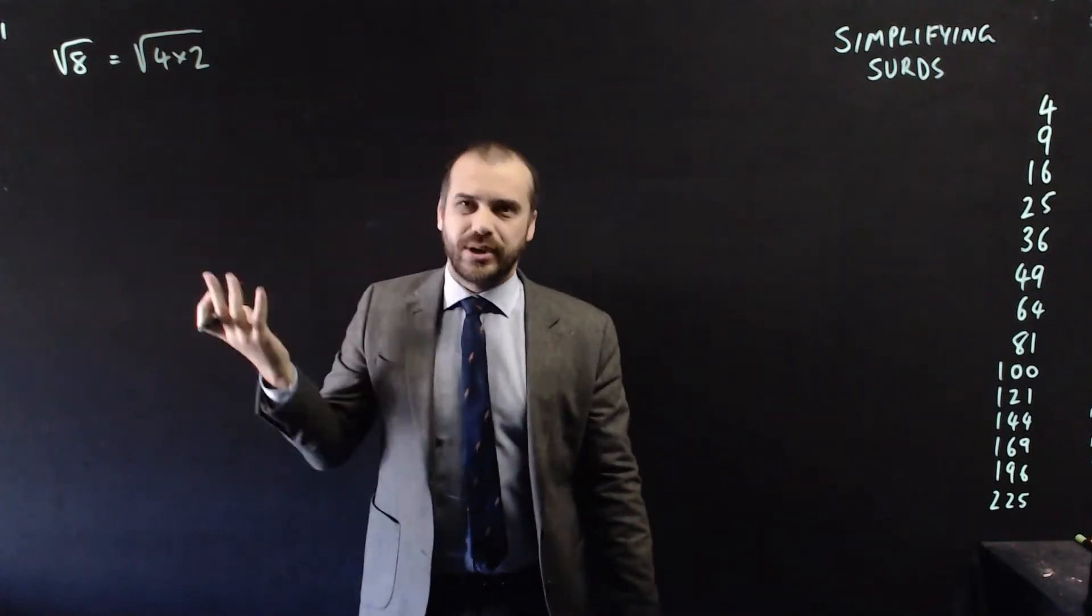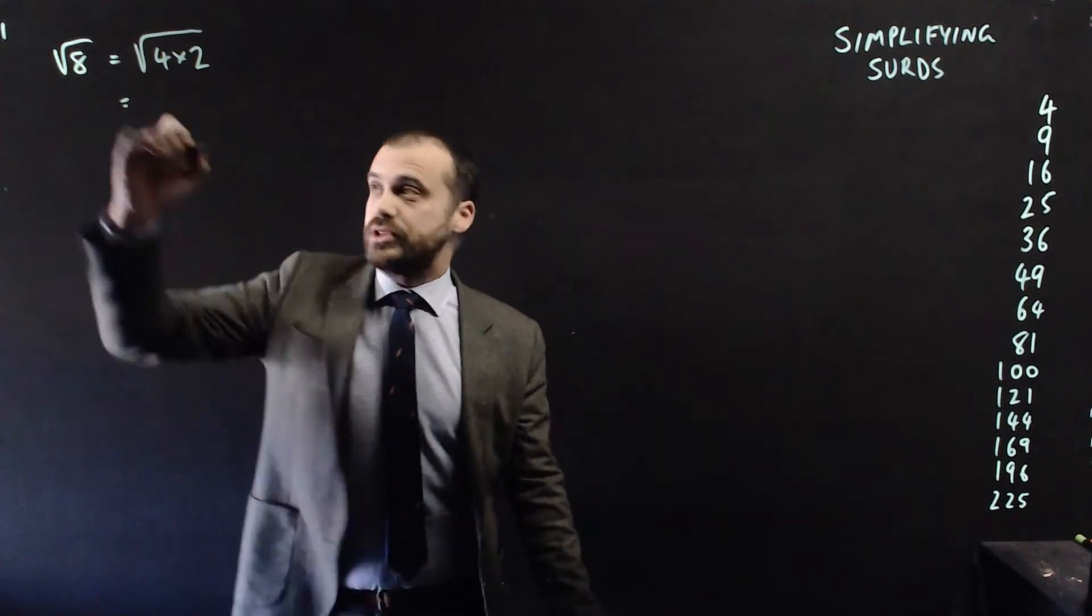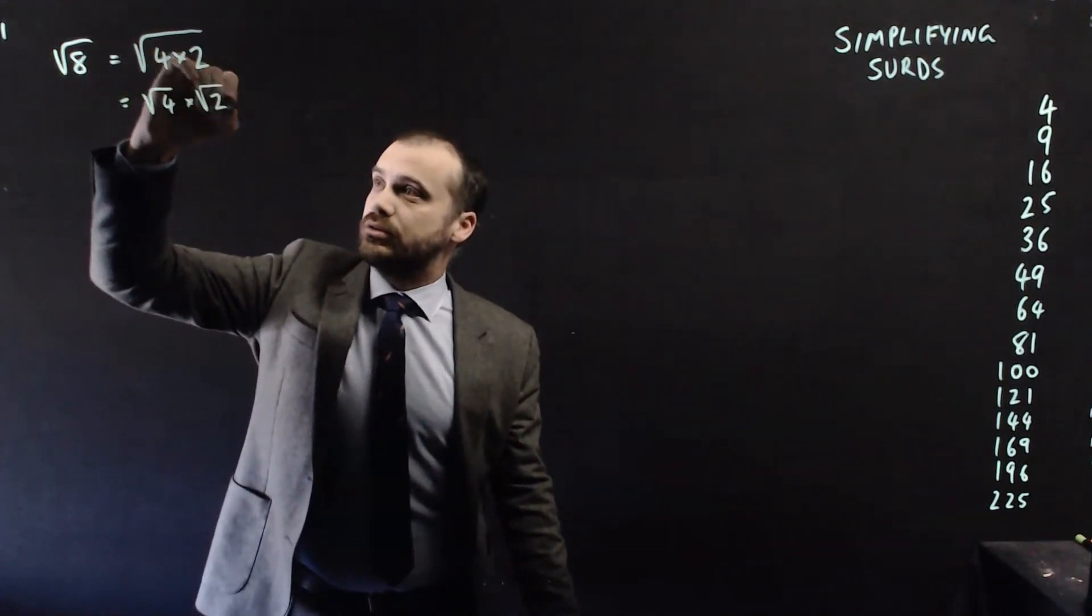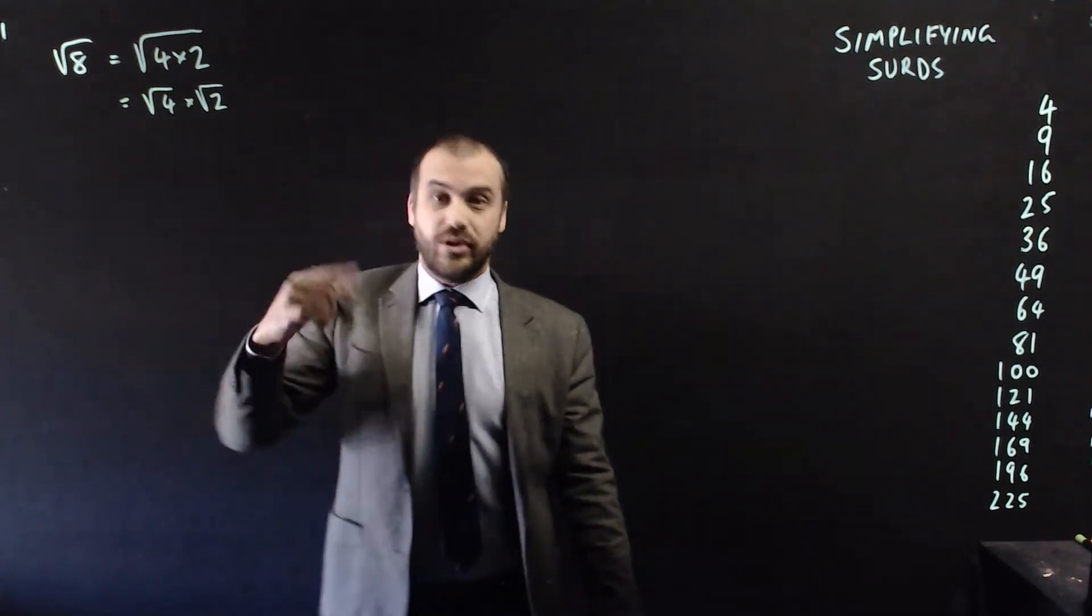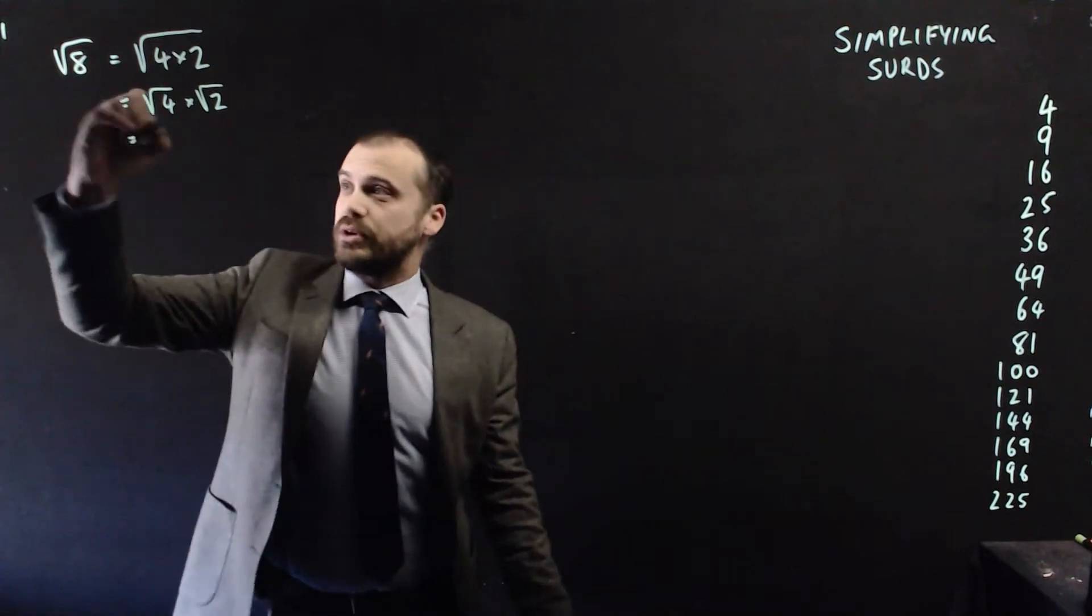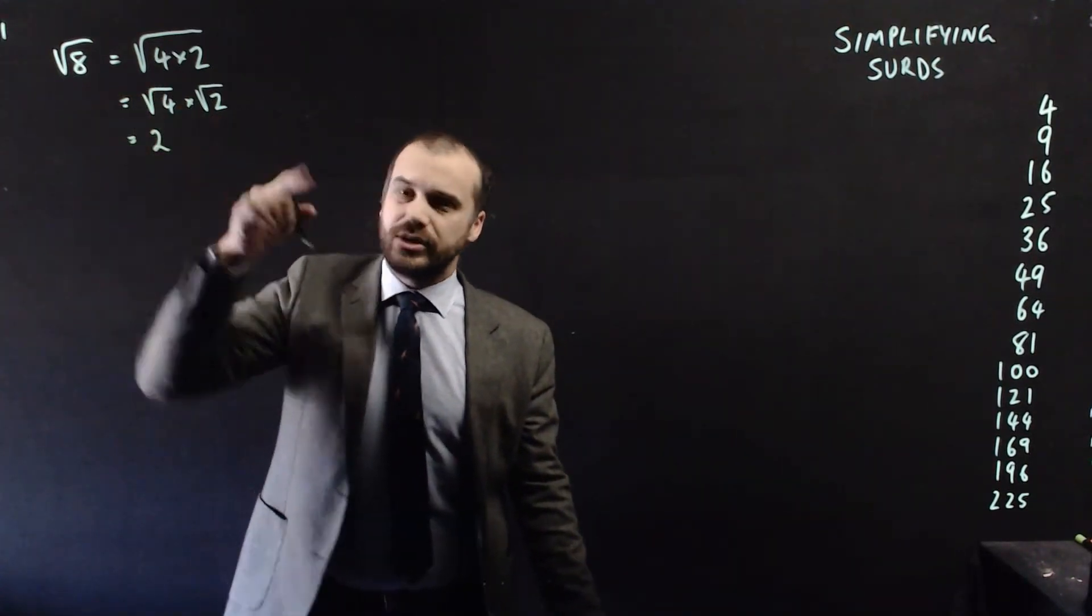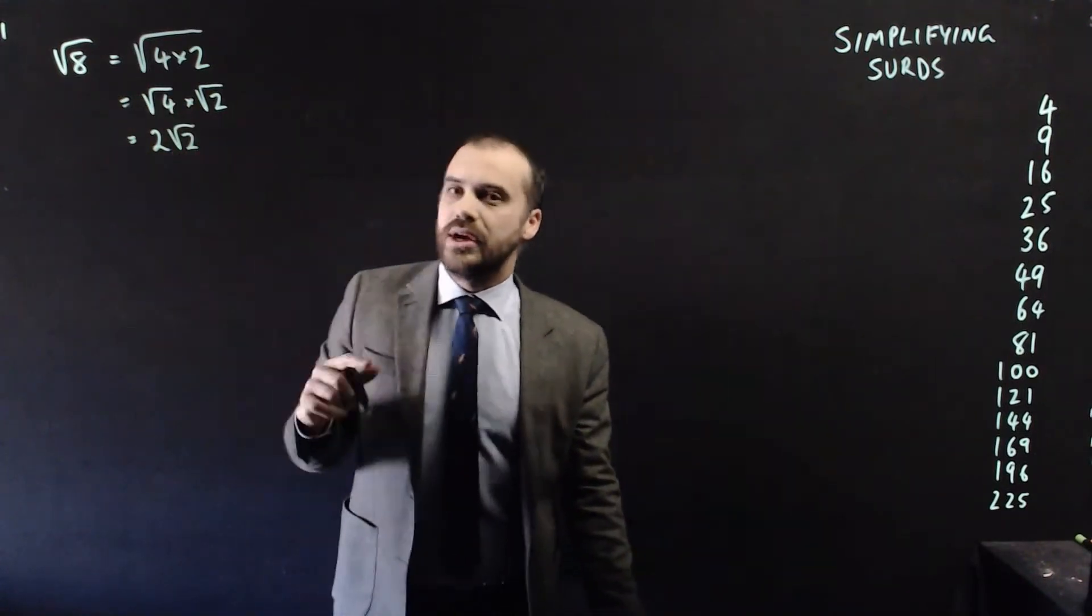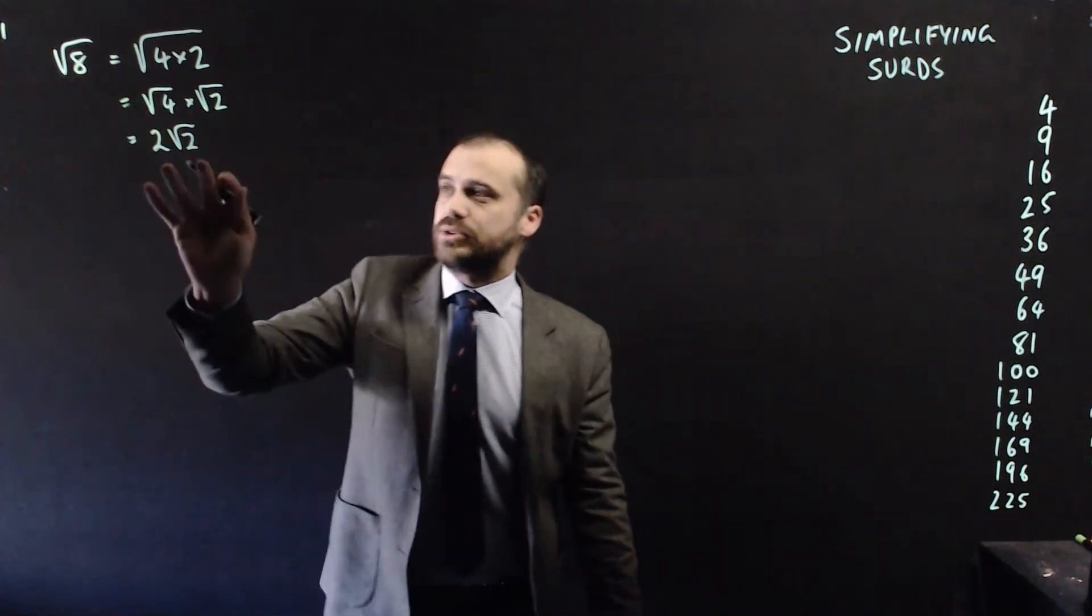Well it's pretty obvious that root 8 can be written as root 4 times 2. So where do I go from here? Well I can actually write it as two separate square roots now: root 4 times root 2. And finally, the square root of 4 is 2, so now I get 2 times root 2. I don't need the little times sign there. That is the simplified version of root 8. Root 8 is equal to 2 root 2.